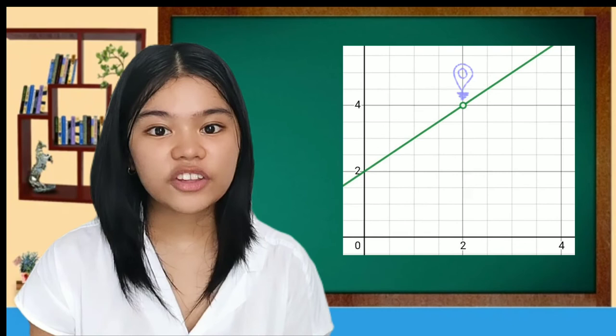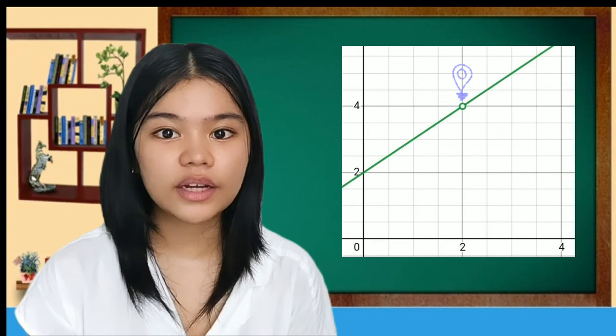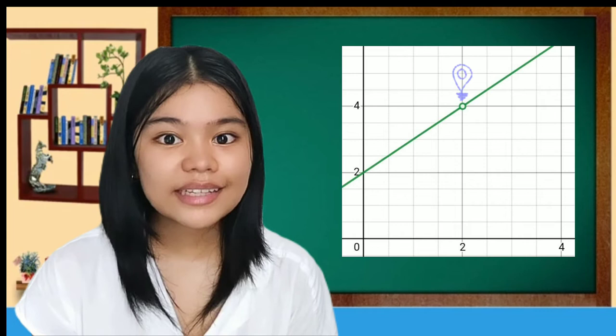As a graph, it looks like this. We now find ourselves at a confusing situation. We cannot exactly say what the value at x equals 2 is, but we know that it's going to 4.